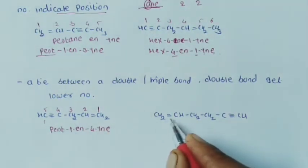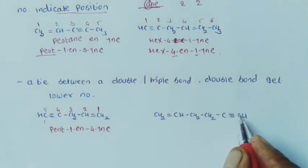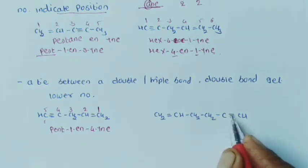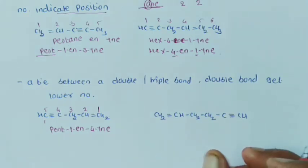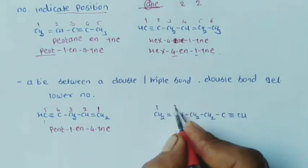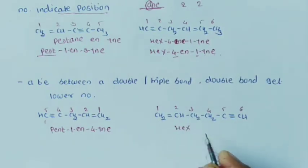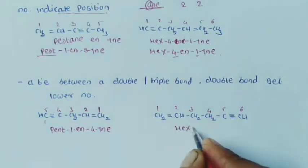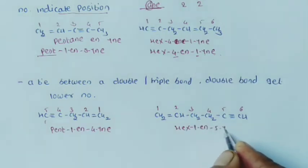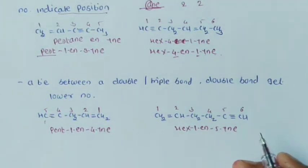Next example: CH2=CH-CH2-CH2-C≡CH. Here also the double and triple bond are equidistant from both ends, so give numbering from the double bond side: 1, 2, 3, 4, 5, 6. Six carbons means hex. The carbon-carbon double bond starts at carbon 1 (1-en) and the triple bond starts at carbon 5 (5-yne). The IUPAC name of this compound is hex-1-en-5-yne.